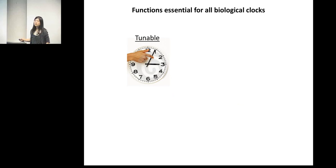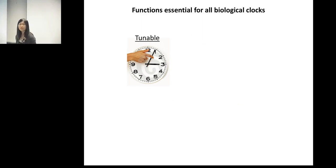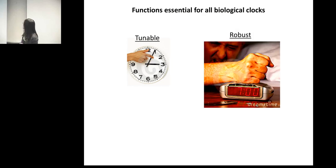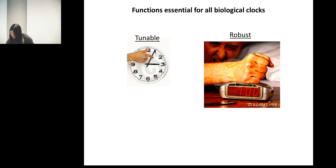Any oscillator must be tunable, meaning it can sense environmental cues such as light, temperature, and other conditions and adjust accordingly. But under constant conditions, it must be robust. Tunability and robustness are the two basic functions that all biological clocks should have. The question is whether we can find fundamental design principles that yield these functions. This is very challenging because a typical oscillator pathway like the cell cycle can involve hundreds of molecules, making it hard to gain basic insights by looking at all the molecular details.